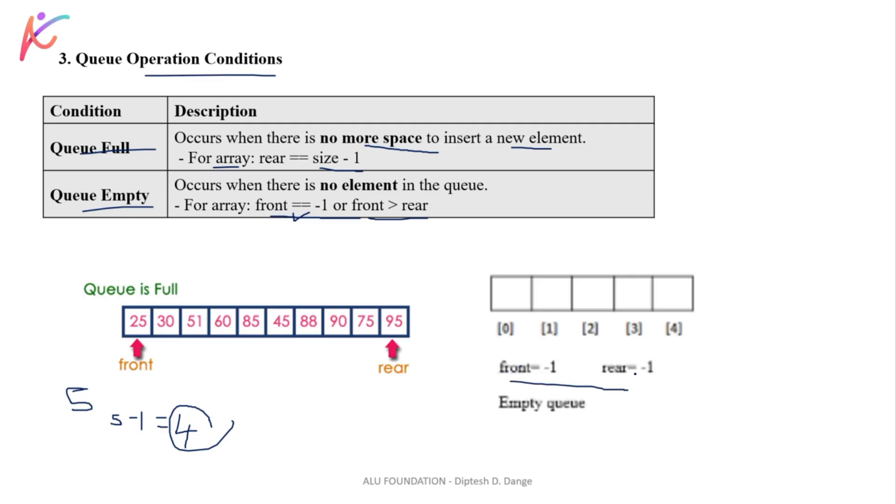The condition greater than rear may not happen basically, it can happen. But if front equals minus 1, then we know that there is not even one element. When there is not even one element, then front and rear are pointing to minus 1. Both are pointing to minus 1, then we know that not even one element is available in the Queue, and our Queue is empty.